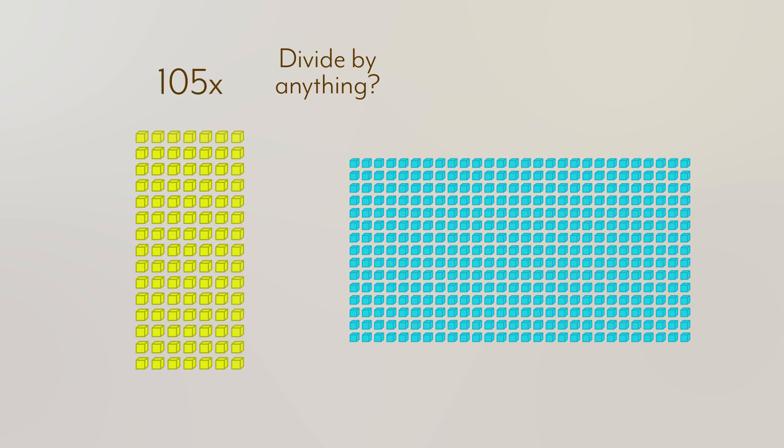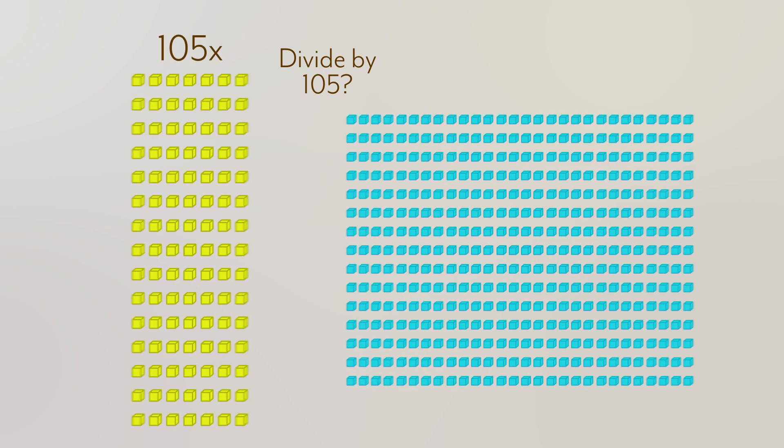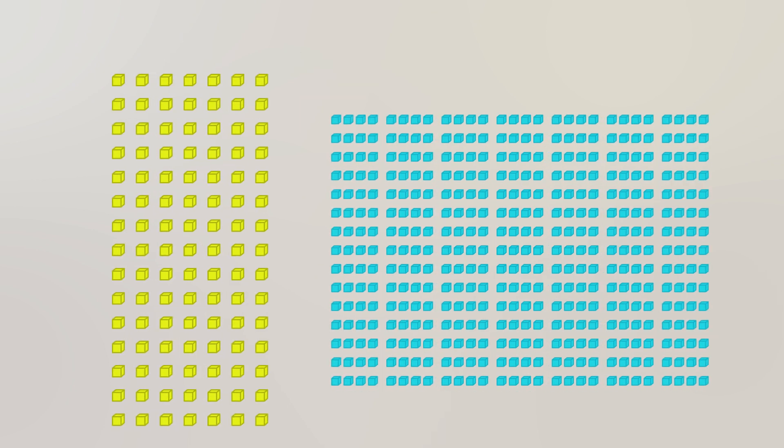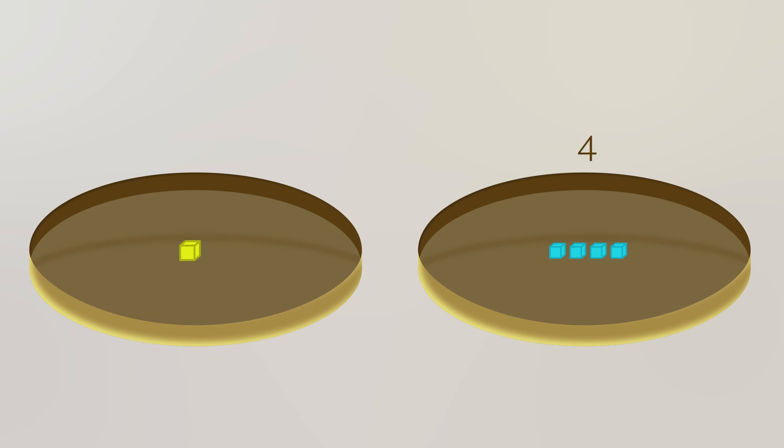We have 105 X blocks on the left, so maybe we should try that. We seem to be lucky here. When we divide both sides by 105, we get a whole number. That is, four. So that's what X is. Four.